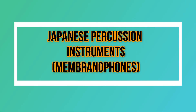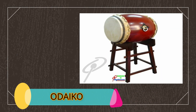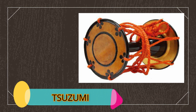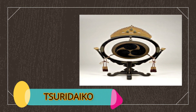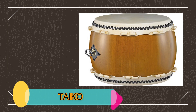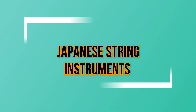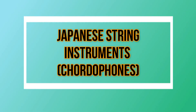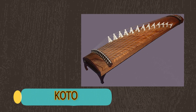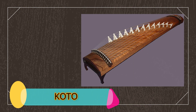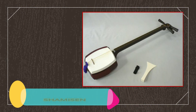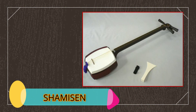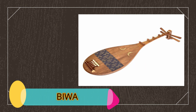Let's start with the Japanese percussion instruments. Next, we have the string instruments: Koto, Shamisen, and Biwa.